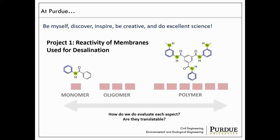In terms of research at Purdue, my statement that encompasses me as a whole is: be myself, discover, inspire, be creative, and do excellent science. One project here is a classic example of what I love to explore — looking at how chemical reactions of monomers in a homogenous solution can change as we start looking at 2D structures, a 2D polymer. How does the reaction change as we move to these larger scale systems? Can we evaluate each aspect individually, but then they're not translatable?